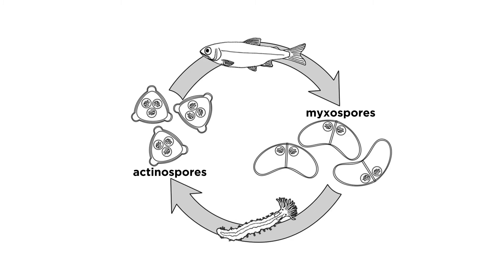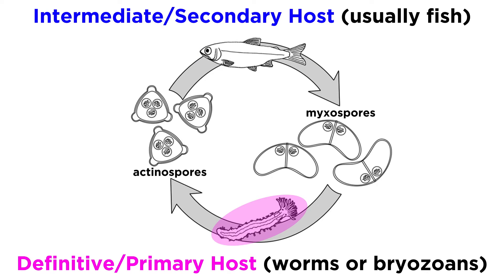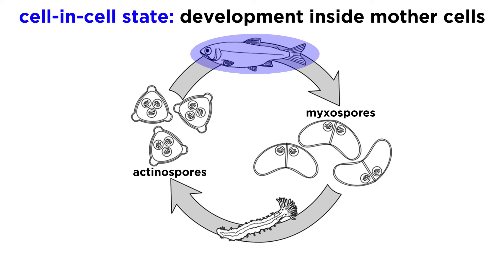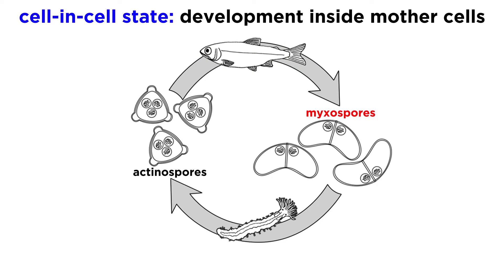Mixozoans have complex parasitic life cycles that involve an intermediate or secondary host — usually a fish, but sometimes an amphibian, reptile, bird, or mammal — and a definitive or primary host, usually worms or bryozoans. Mixozoans inside infected intermediate hosts are characterized by the cell-in-cell state, where the daughter cells develop directly inside the mother cells. These parasitic cells divide and spread via the nervous or circulatory system, and eventually produce mixospores that leave the intermediate host.